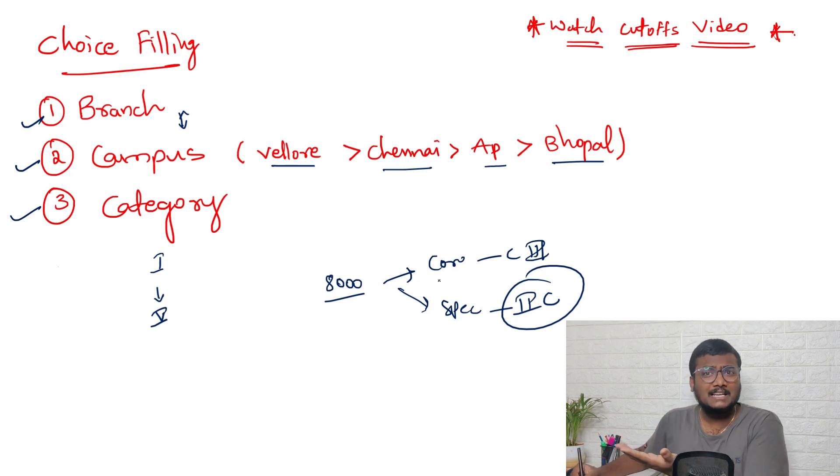That is the difference I wanted to say. There may be cases like, for example, at 8,000 you can get core third category and you can get CSE with specializations in second category. In that case he can save a lot of money. He can surely go for specialization. Please think like that while you fill the choices.